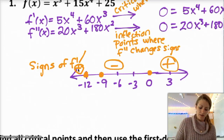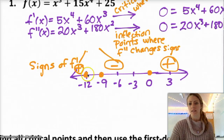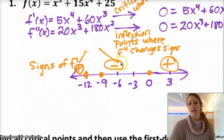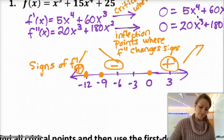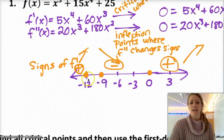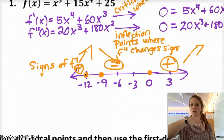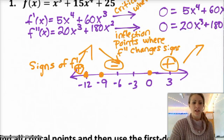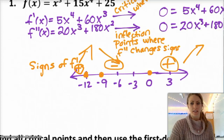At negative 12, I go from positive slope to a zero slope and then negative slope, so negative 12 has to be a local max. Then at 0, it goes from negative to positive slope again. So negative 12 is a local max, and 0 is a local min. Then I want to do the same thing for those zero values of f double prime.